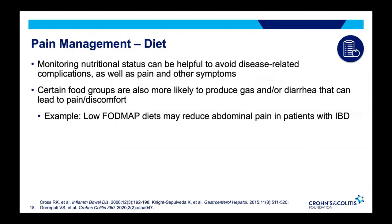One important issue relates to diet. It's important to monitor what is being eaten, in part to avoid potential disease-related complications — particularly if you have strictures that might not tolerate poorly digested foods. Certain food groups are more likely to produce gas or diarrhea, which can lead to pain and discomfort. The FODMAPs are a key example, but dairy and other food groups can also lead to these symptoms.